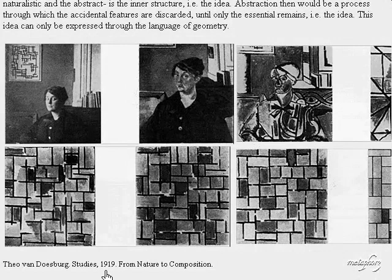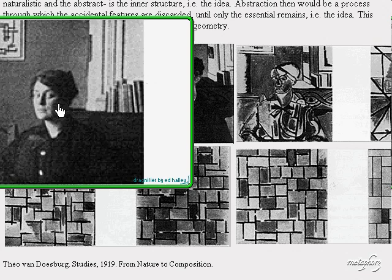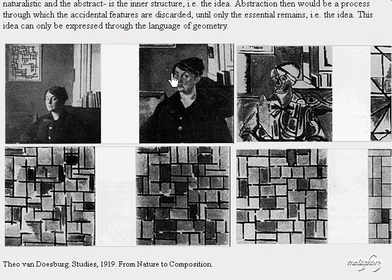This is a set of paintings by Theo van Doesburg, the originator or founding member of the De Stijl movement in the Netherlands. First we look at a photograph of a woman, and next we have something that is much more impressionistic — the kind of thing you might find from one of the Impressionists. This is somewhat of an abstraction of the photograph on the left, and proceeding further right, we find something even more abstract.